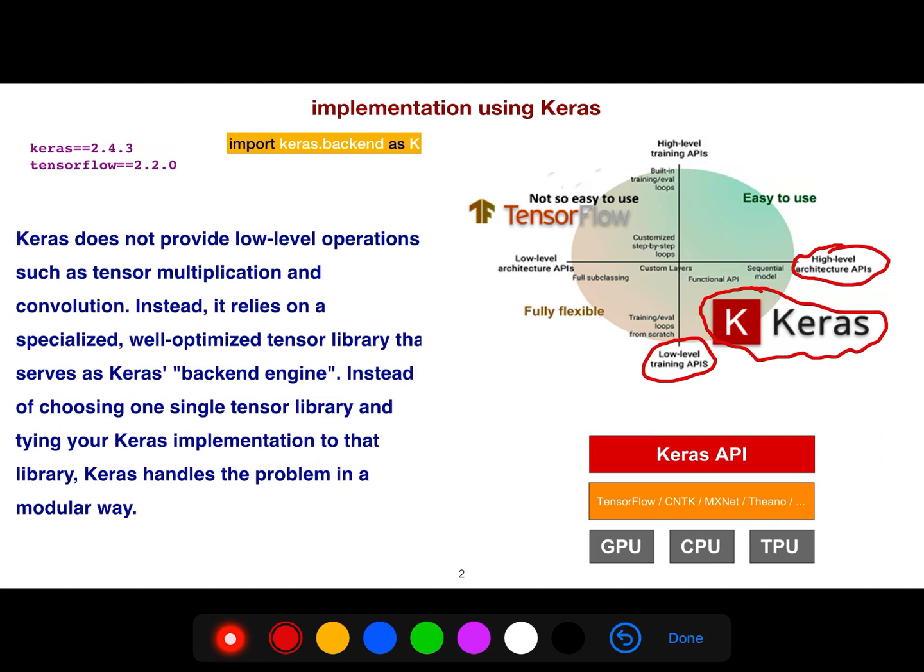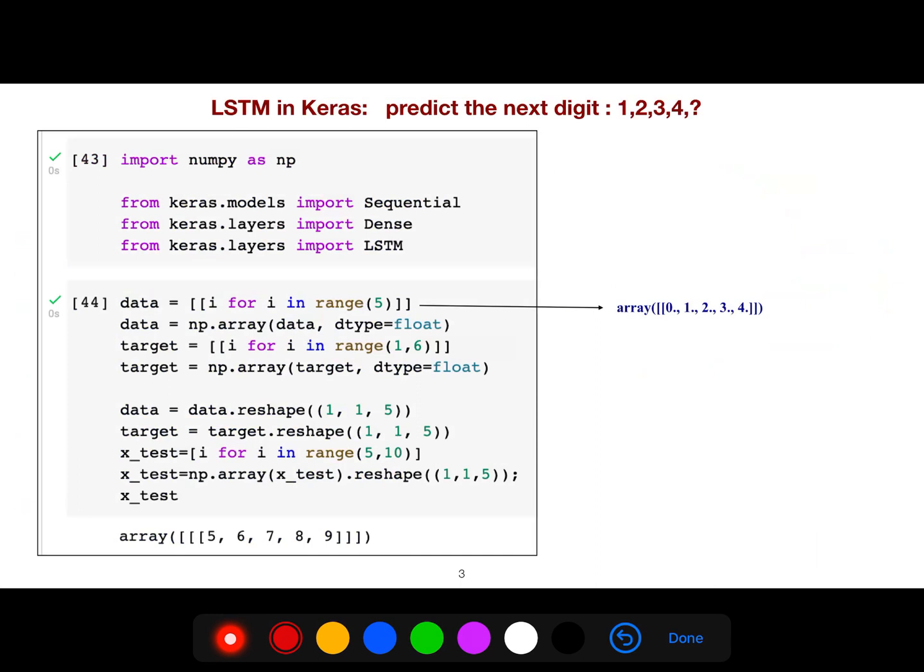Keras does not provide low-level operations such as tensor multiplication and convolution. Instead, it relies on a specialized, well-optimized tensor library that serves as Keras's backend engine. Instead of choosing one single tensor library and tying your Keras implementation to that library, Keras handles the problem in a modular way. The reason we like pointer networks is that we can do something that couldn't have been done with standard approaches.